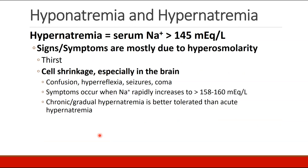The signs and symptoms of hypernatremia are mostly due to hyperosmolarity. Patients will exhibit thirst and cell shrinkage, especially in the brain, leading to confusion, hyperreflexia, seizures, and coma. Once again, symptoms occur especially when hypernatremia has a rapid onset, typically to levels of about 158 to 160 milliequivalents per liter, whereas chronic or gradual hypernatremia is much better tolerated.